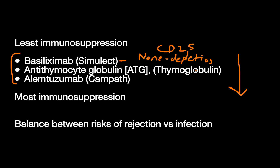Finally, we have the most intense agent — alemtuzumab, also known as Campath. This is a monoclonal antibody to CD52, a marker on T-cells. Conveniently, CD52 is the reverse of basiliximab's target CD25. Alemtuzumab severely depletes the body's T-cells with just a single dose at the time of surgery.